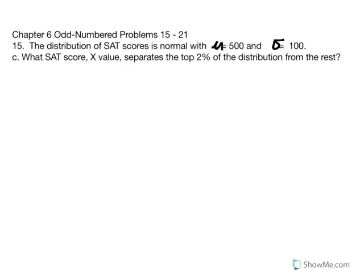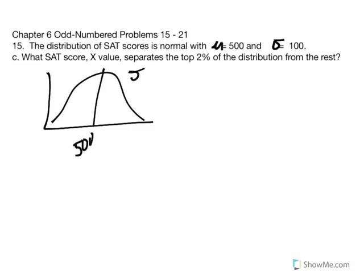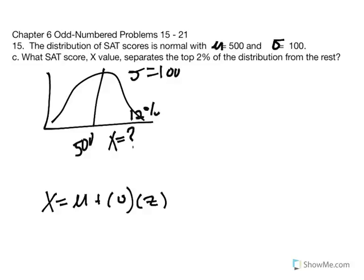The last SAT problem uses the same parameters — mean of 500, standard deviation of 100 — and asks what SAT score partitions the distribution with 2% in the tail. Using the equation X equals mu plus standard deviation multiplied by Z: X equals 500 plus 100 multiplied by Z, which we need to find by converting 2% to a proportion of 0.02.